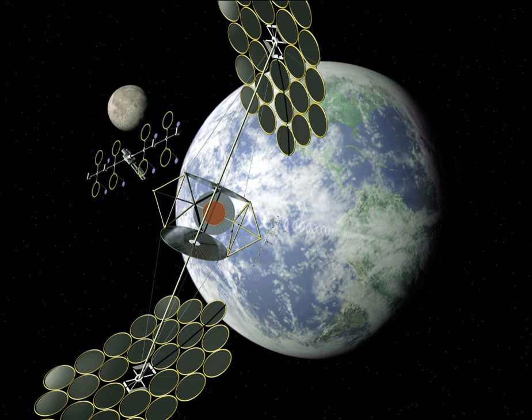The SBSP concept is attractive because space has several major advantages over the Earth's surface for the collection of solar power. It is always solar noon in space and full sun. Collecting surfaces could receive much more intense sunlight, owing to the lack of obstructions such as atmospheric gases, clouds, dust and other weather events. Consequently, the intensity in orbit is approximately 144% of the maximum attainable intensity on Earth's surface. A satellite could be illuminated over 99% of the time, and be in Earth's shadow a maximum of only 72 minutes per night at the spring and fall equinoxes at local midnight. Orbiting satellites can be exposed to a consistently high degree of solar radiation, generally for 24 hours per day, whereas Earth's surface solar panels currently collect power for an average of 29% of the day.